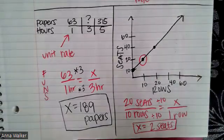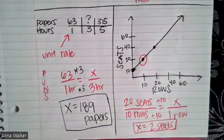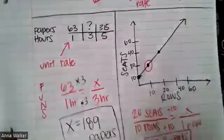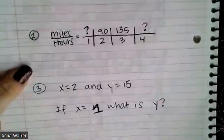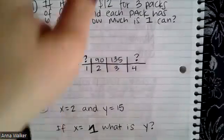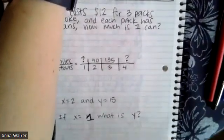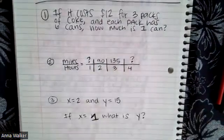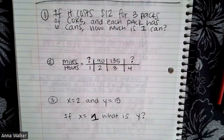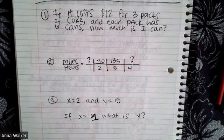I'm going to give you three examples to do. I will read them and then you need to copy them and you can always check your answers in the table of contents. The first one is if it costs $12 for three packs of coke and each pack has six cans, how much is one can? So what is the cost of just one can?